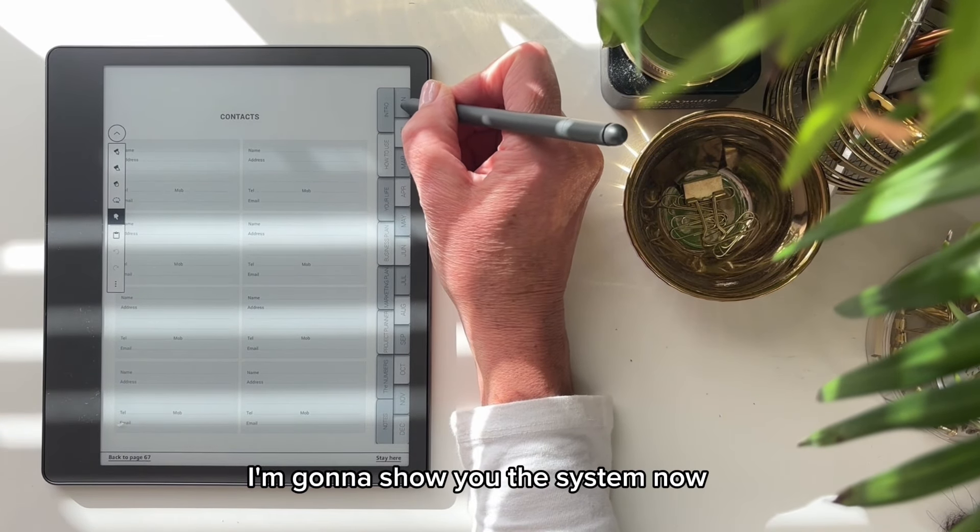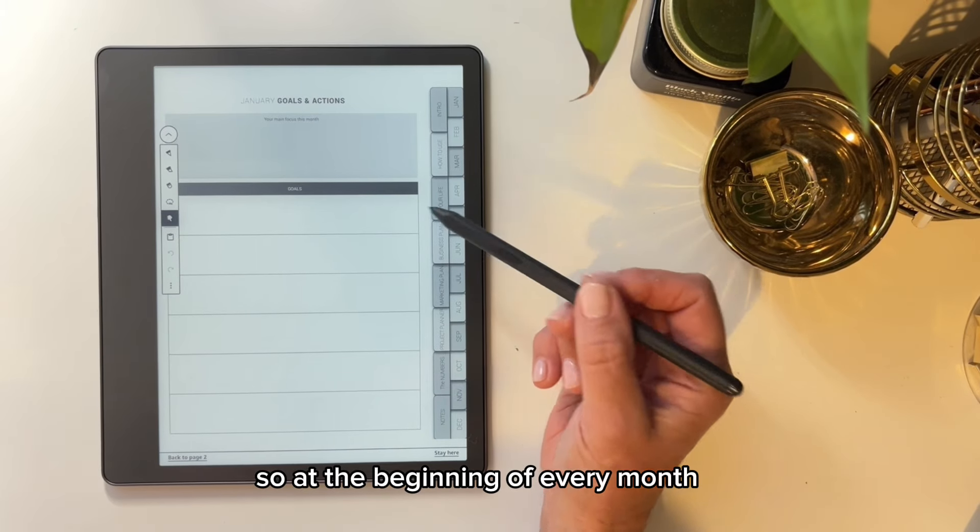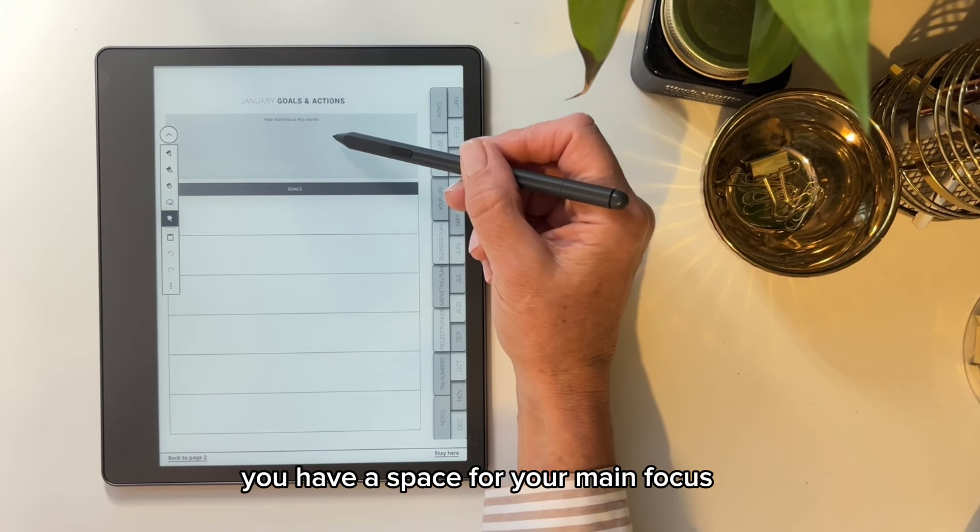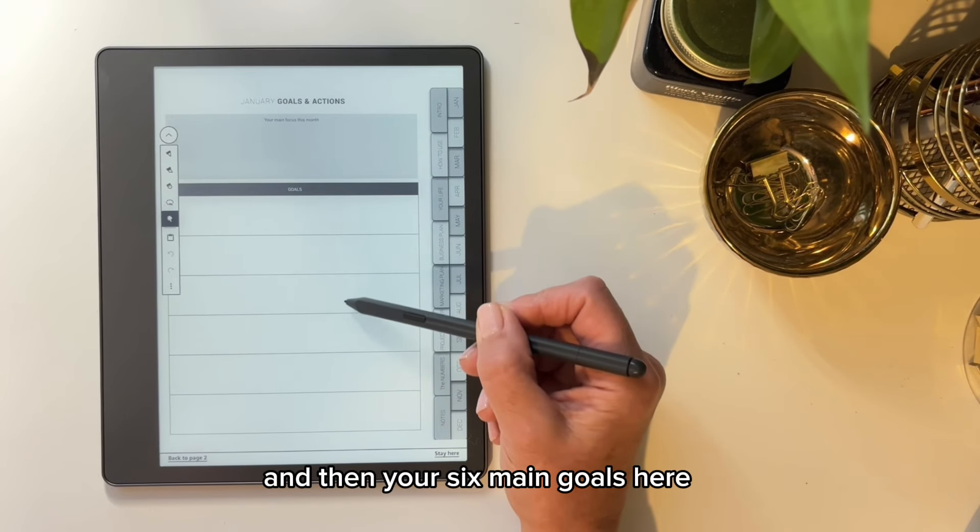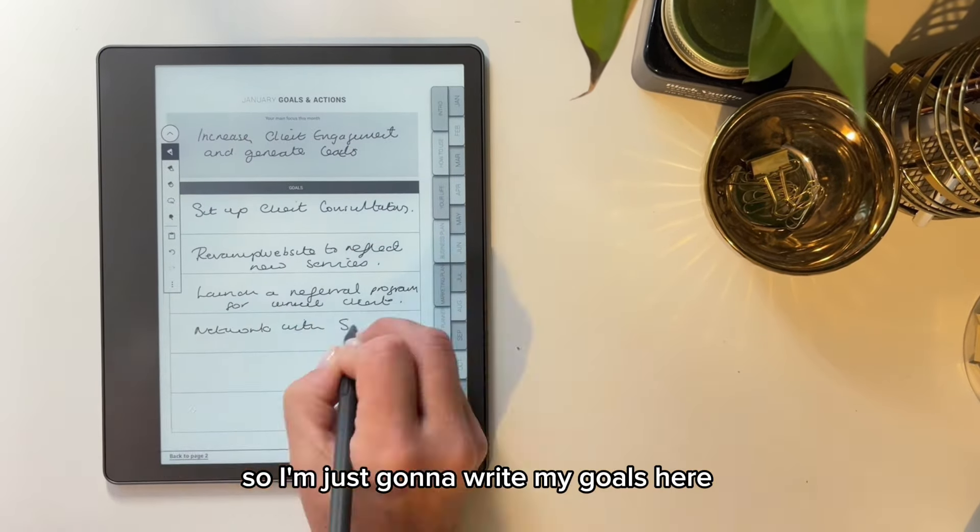I'm going to show you the system now. So at the beginning of every month, you have the space for your main focus and then your six main goals here. So I'm just going to write my goals here.